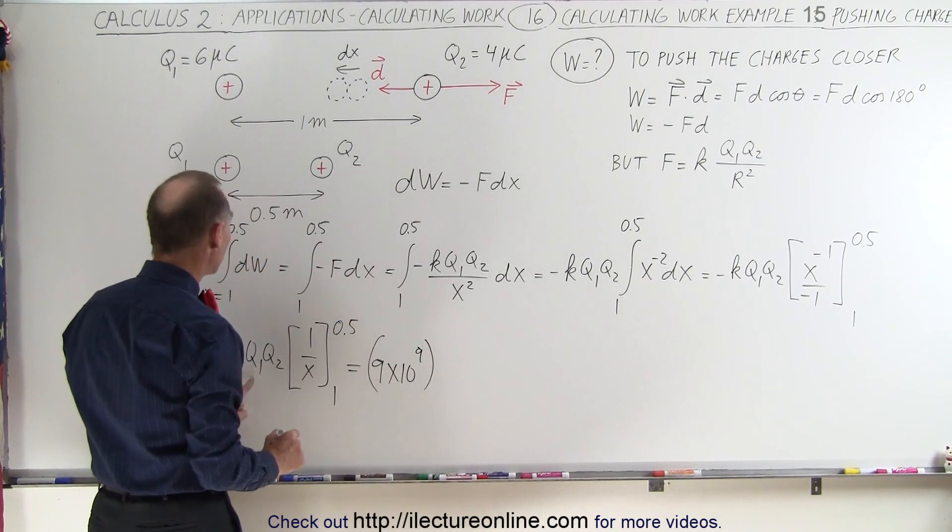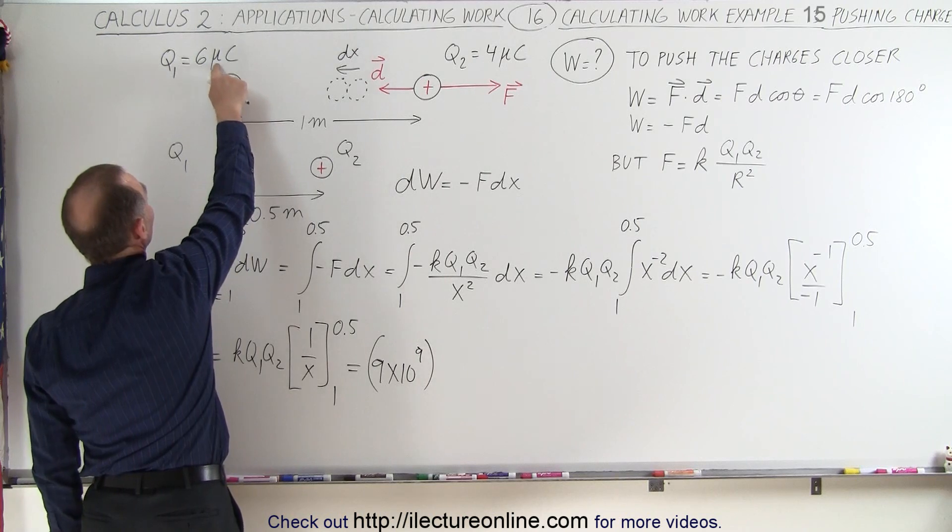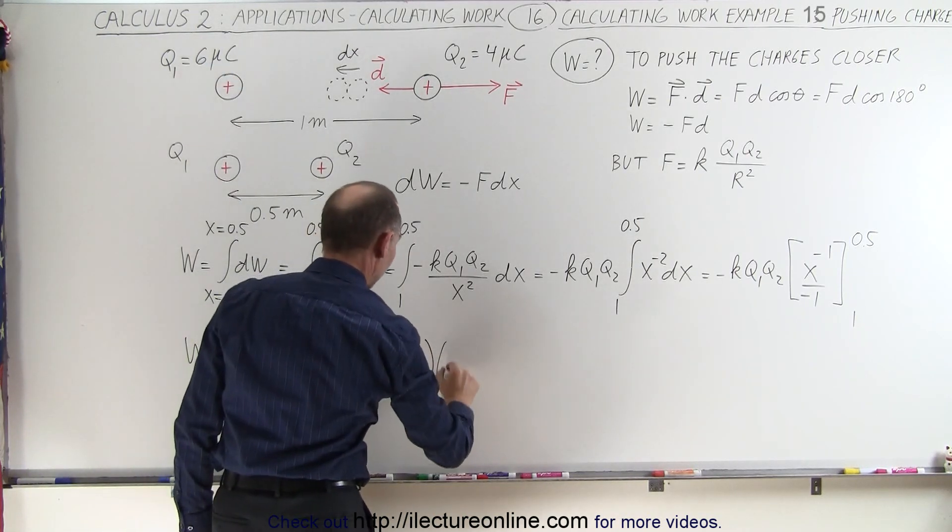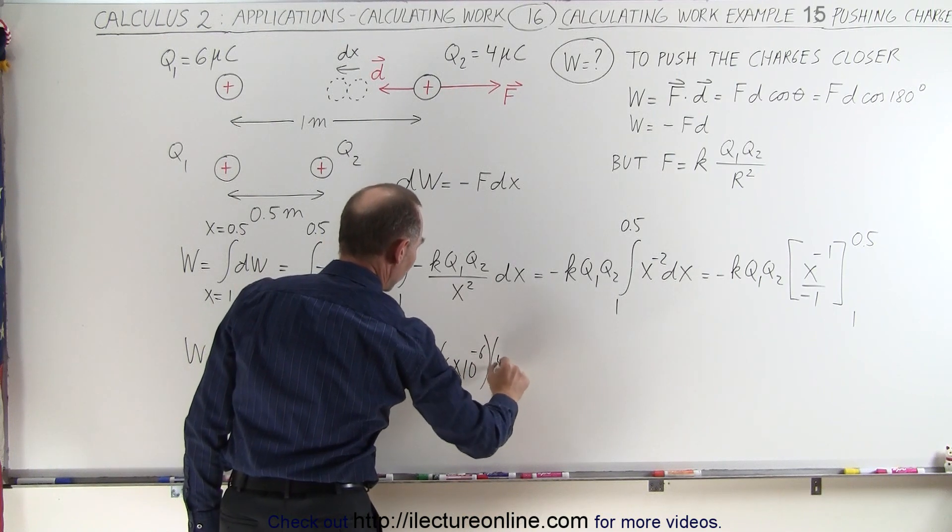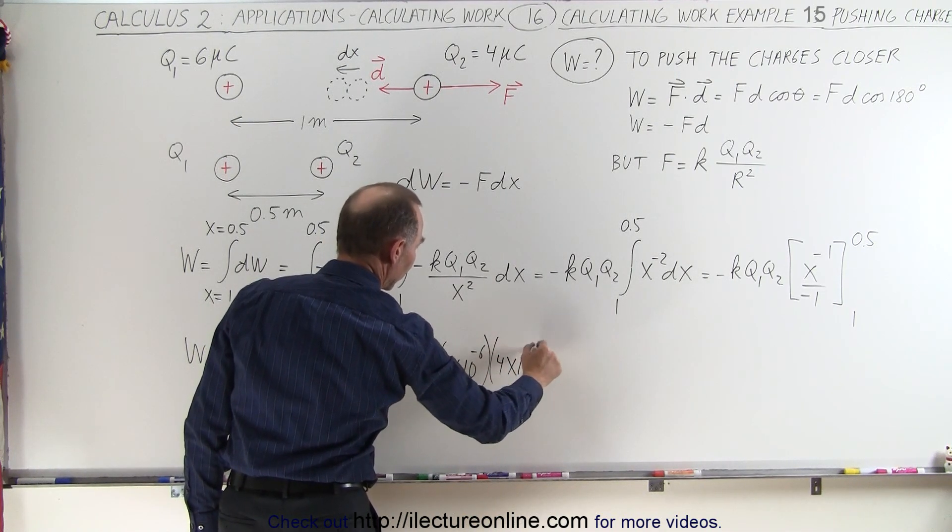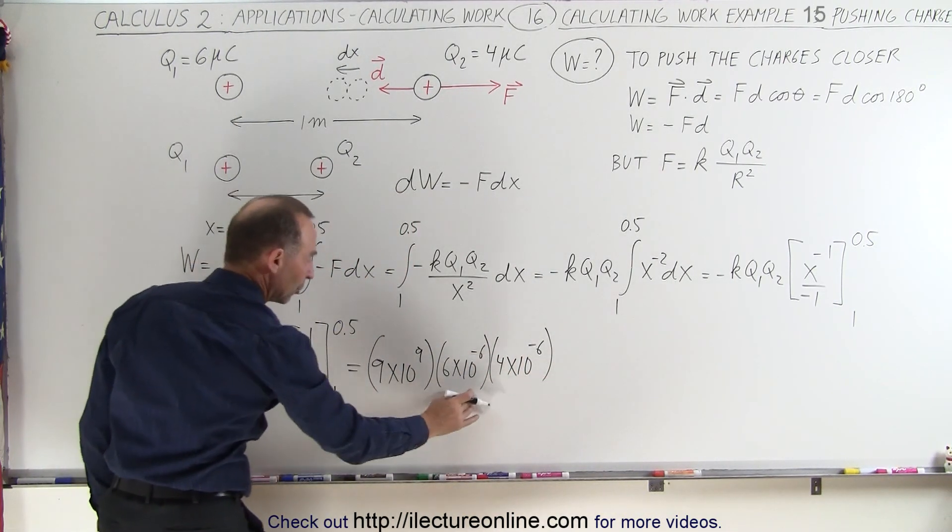We multiply times the two charges. Now microcoulombs means 10 to the minus 6. So this is 6 times 10 to the minus 6. This is 4 times 10 to the minus 6. So now we have kq1q2.